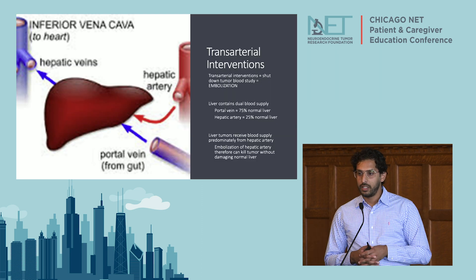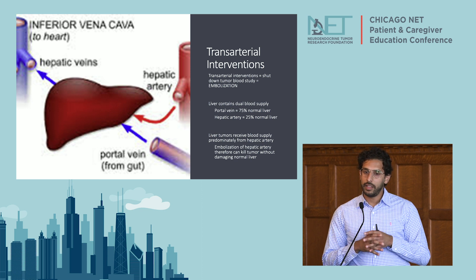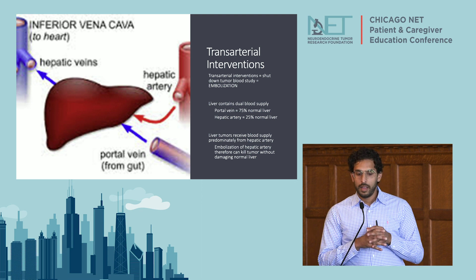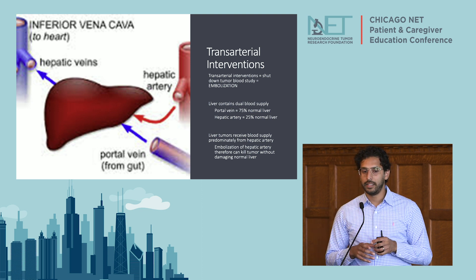The vast majority of the transarterial interventions that we do are going to be in the liver. Why the liver? The liver is a very unique organ in the body in the sense that it has two blood vessels that supply it. It has a hepatic artery, which tumors in the liver derive almost all of their blood flow from, and then the portal vein, which the majority of normal liver derives its blood from. So you can imagine if you go into the hepatic artery, find the blood vessels that feed the tumor, and embolize or shut those blood vessels down, you can hopefully kill the majority of the tumor and spare the rest of the normal liver.